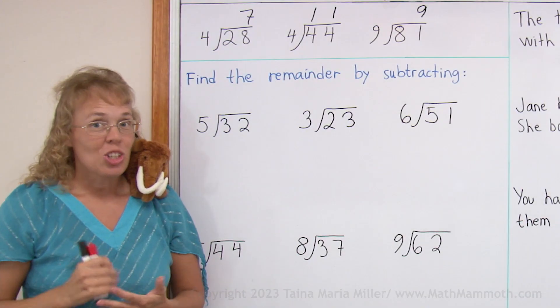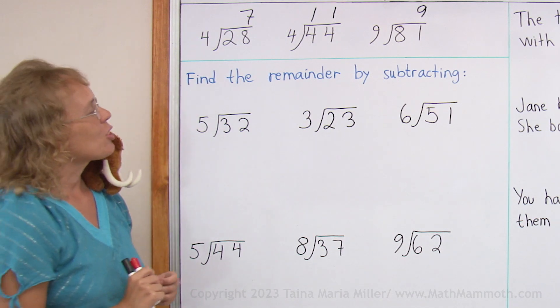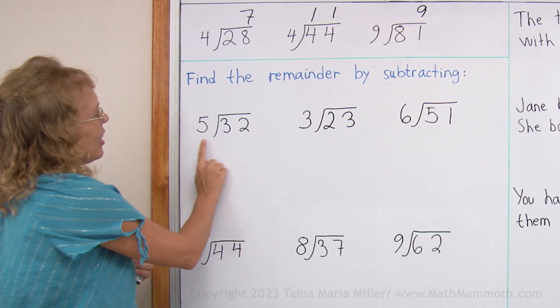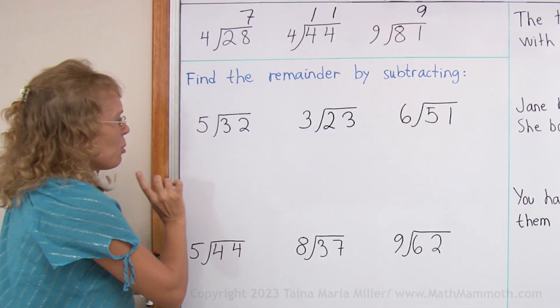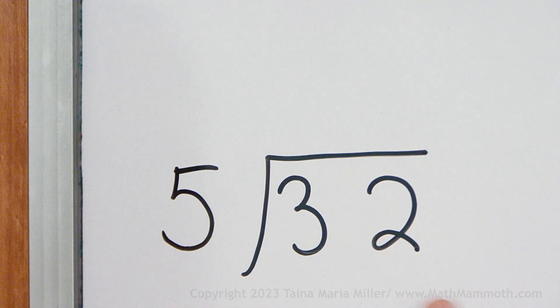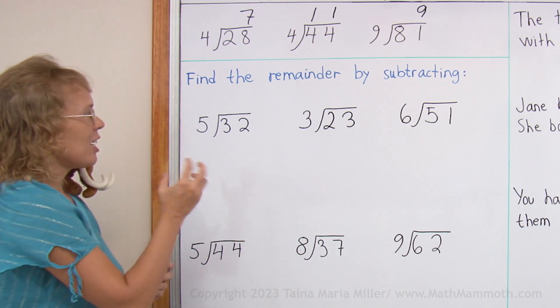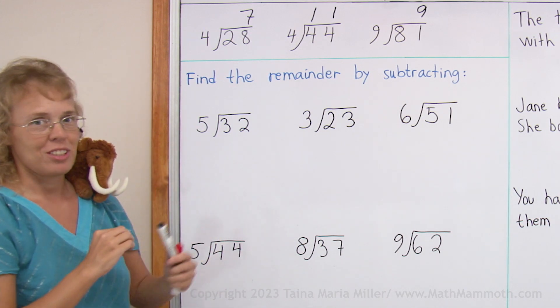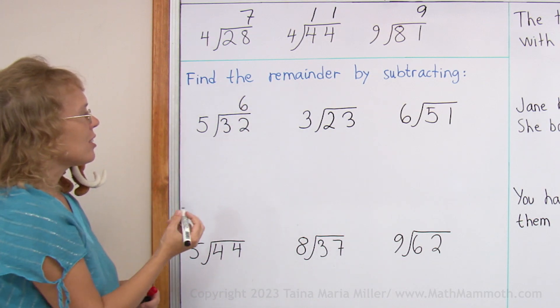This division corner comes in handy when we have uneven division, and I'll show you how. Here we have 32 divided by 5. You need to think, how many 5's are in 32? How many times does 5 go into 32? The answer is 6 times. 6 times 5 equals 30, and 7 times 5 would be more than 32. So 6 times. And I write the 6 here. That's our basic answer.